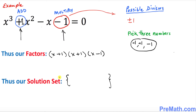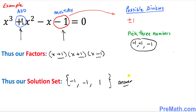Our solution set is whatever these numbers are with the sign changed: positive 1 becomes negative 1, positive 1 becomes negative 1, and negative 1 becomes positive 1. That is our answer. Thanks for watching and please subscribe to my channel for more exciting videos.